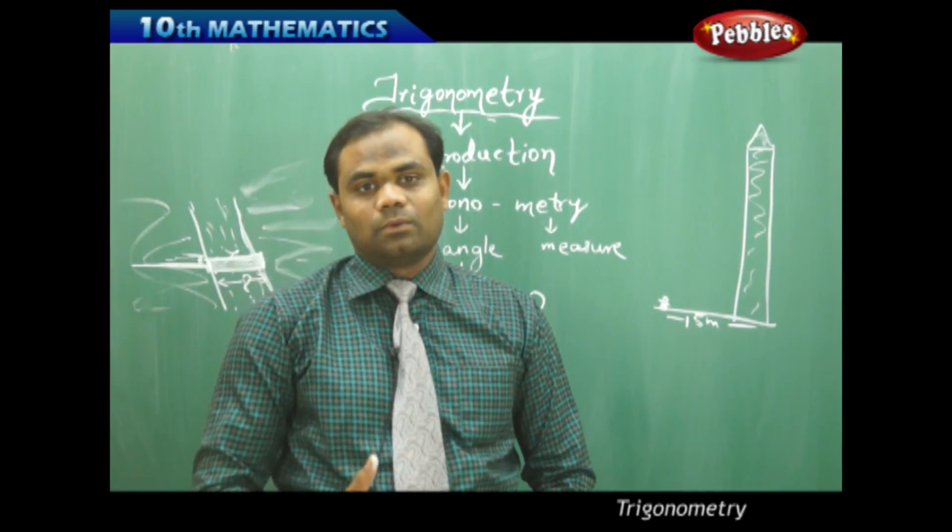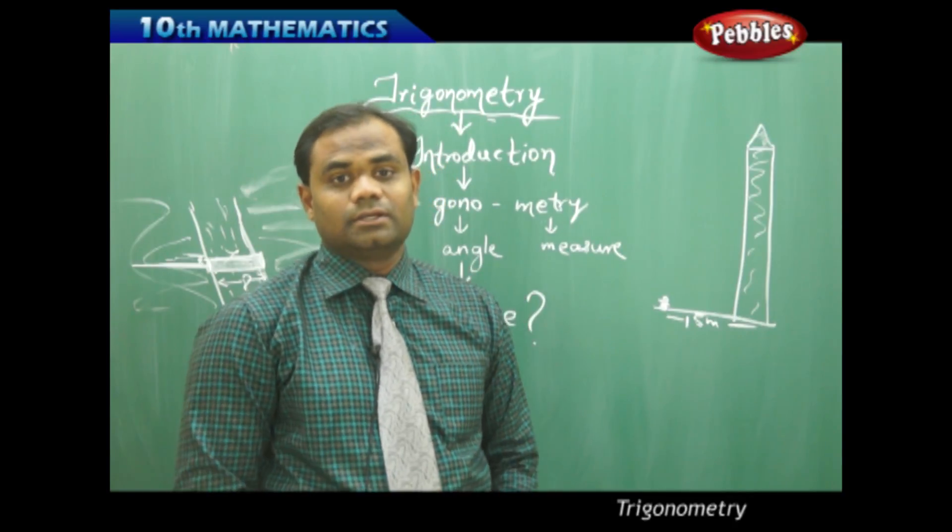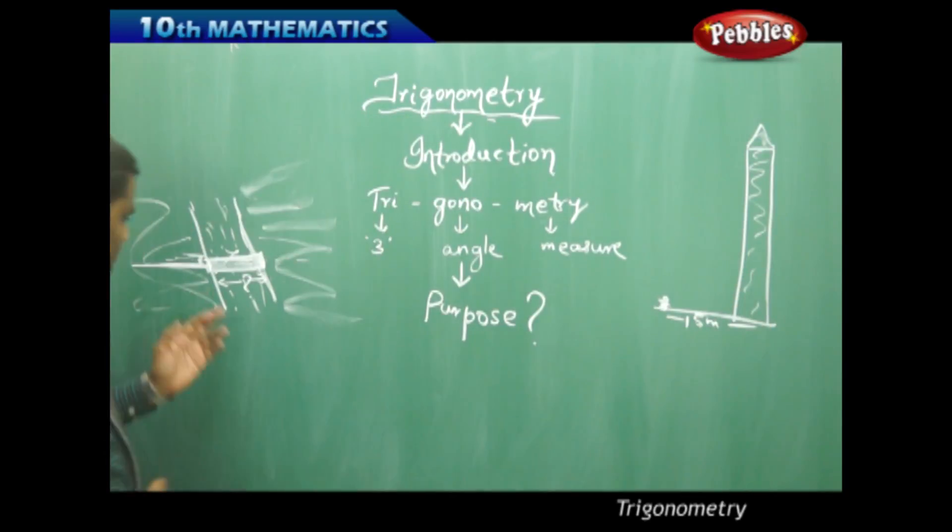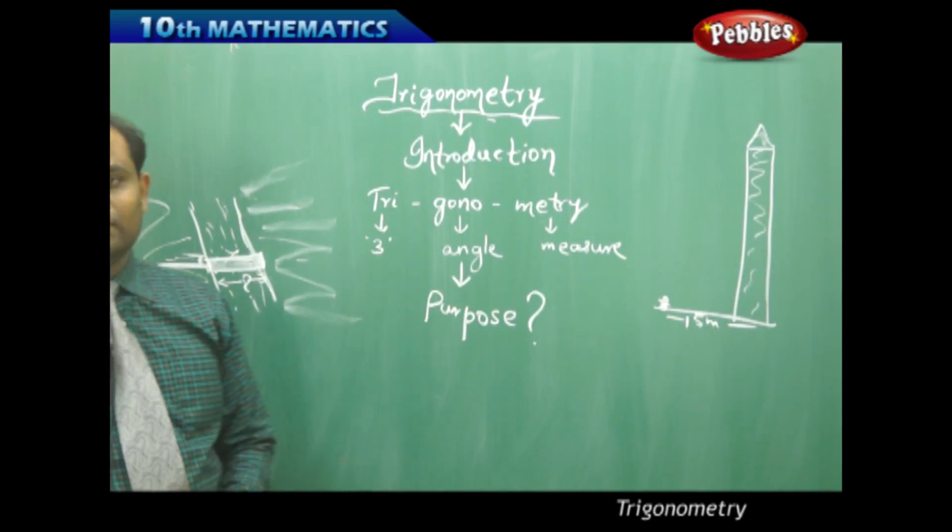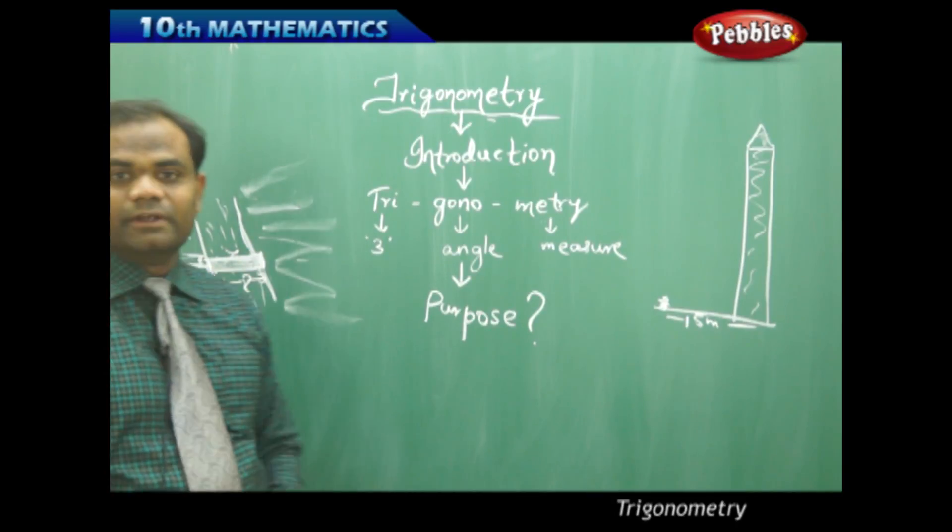Trigonometry is how we introduce the concept which solves many problems like finding the height of the Qutub Minar or crossing the length of the river onto the other side by estimating the width of the river.